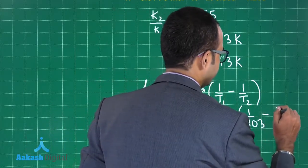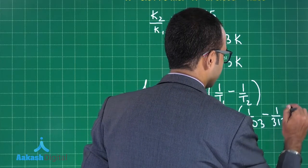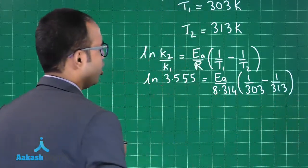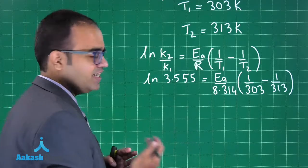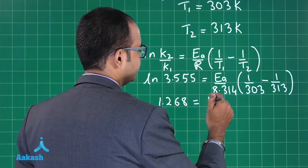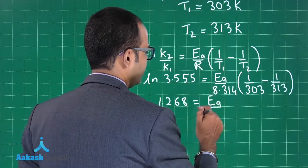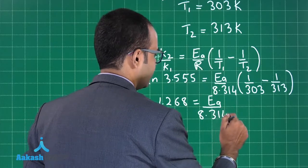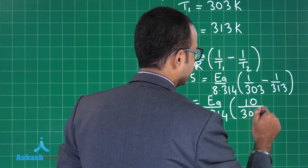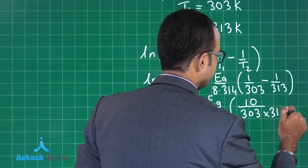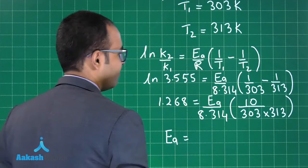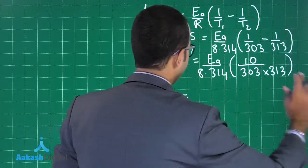If I solve the entire thing, ln(3.555) is 1.268, which equals Ea/8.314 × (10/303×313). So the value of Ea will be how much?